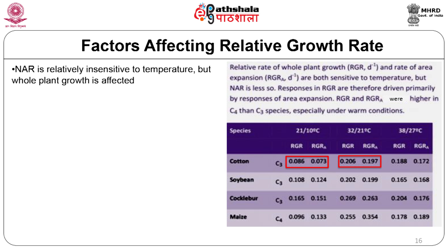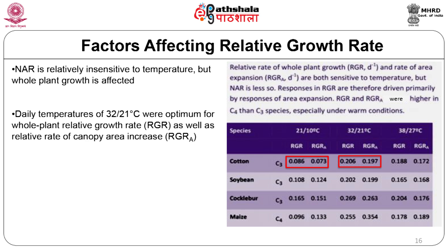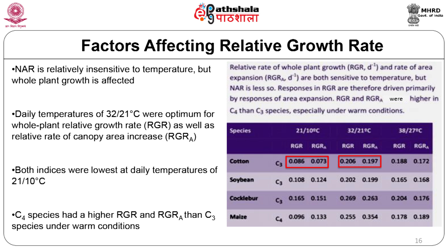NAR is relatively insensitive to temperature, but RGR is affected, indicating that photosynthetic area (LAR) rather than photosynthetic performance per unit surface area (NAR) is responsible for the decrease in RGR. Data from a variety of C3 and C4 plants showed that temperatures of 32°C during the day and 21°C during the night were optimum for whole-plant RGR, while RGR was lowest at 21°C day and 10°C night. RGR of C4 species was higher than that of C3 species, especially under warm conditions.